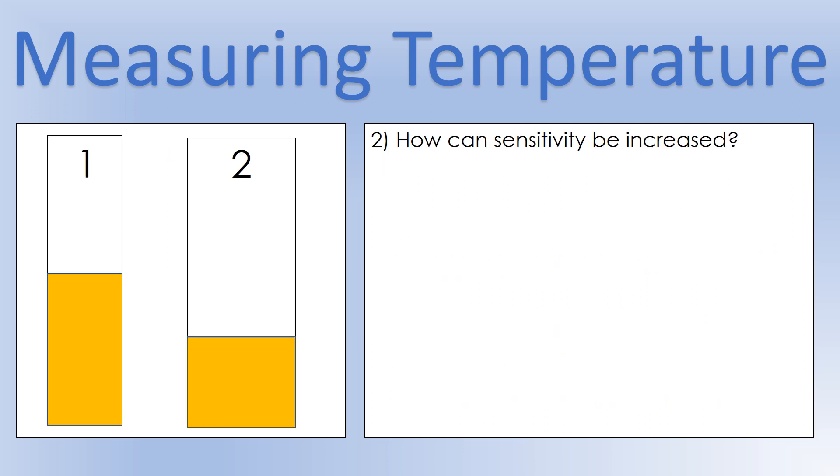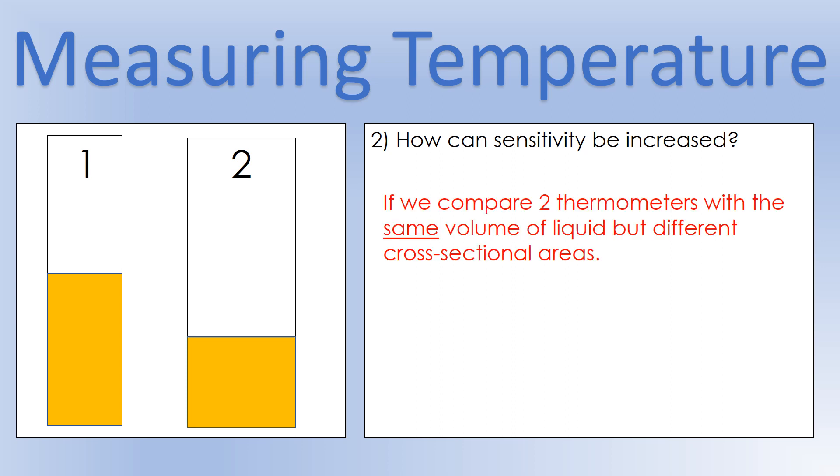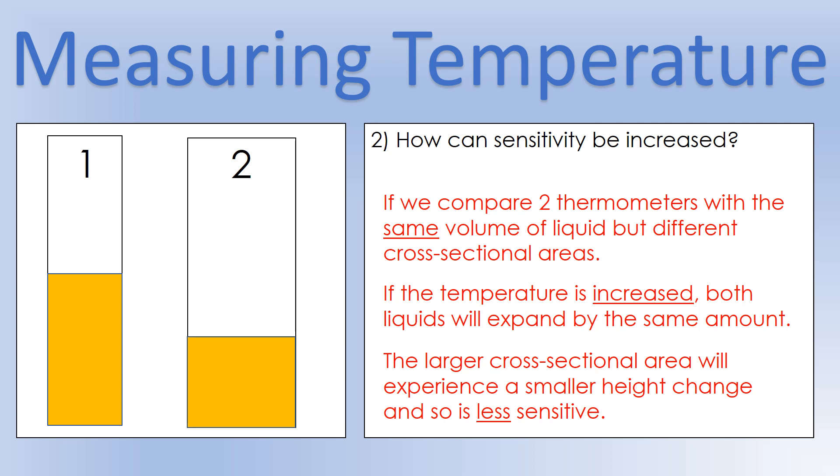That's what sensitivity is. So how can we actually increase the sensitivity of a thermometer when we're designing it? Well, for a liquid-based thermometer, it's all to do with the cross-sectional area of the liquid column. So what we've got here now is two thermometers with the same volume of liquid, but we've got different cross-sectional areas, which is why they've got different heights. But if the temperature is increased, both liquids will expand by the same amount, which means that the larger cross-sectional area will have a smaller height change, which means it's less sensitive. So although the volume increases by the same amount, the height change will be smaller due to the larger cross-sectional area. So depending on our application, we can adjust the cross-sectional area of our thermometer, and that will change how sensitive our measuring device is.